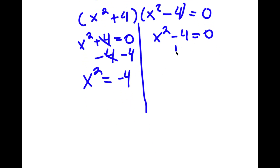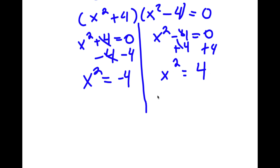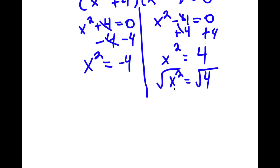Now for x squared minus 4 equals 0, I can add 4 on both sides and I get x squared is equal to positive 4. Now for x squared equals positive 4, this is pretty simple. We just take the square root on both sides. Square root of x squared is x, and the square root of 4 is going to equal positive or negative 2.